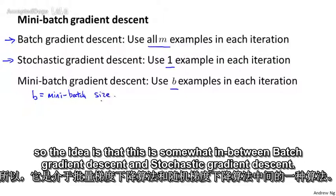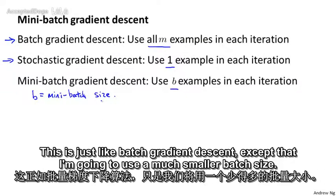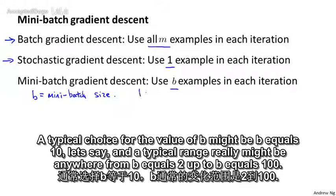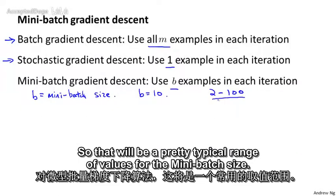So the idea is that this is somewhere in between batch gradient descent and stochastic gradient descent, and it's just like batch gradient descent, except that we're going to use a much smaller batch size. A typical choice for the value of b might be b equals 10, and the typical range really might be anywhere from b equals 2 up to b equals 100.